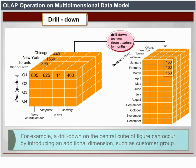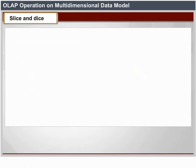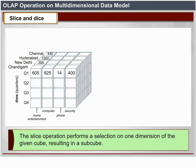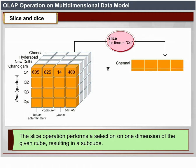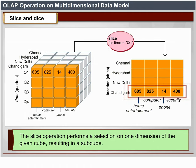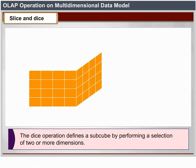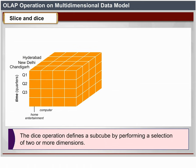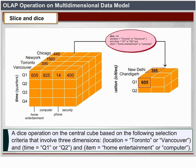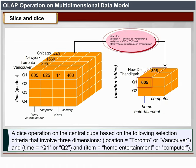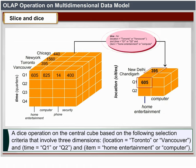Slice and Dice. The slice operation performs a selection on one dimension of the given cube, resulting in a subcube. The dice operation defines a subcube by performing a selection on two or more dimensions — for example, a dice operation based on: location = Toronto or Vancouver, time = Q1 or Q2, and item = Home entertainment or computer.